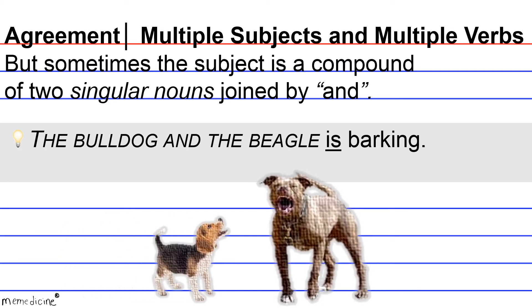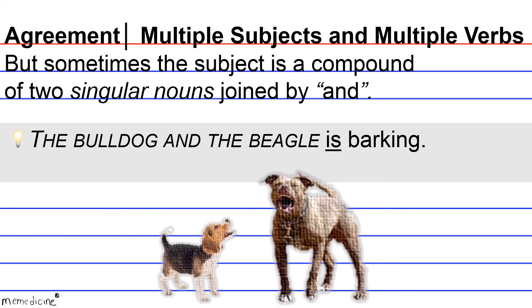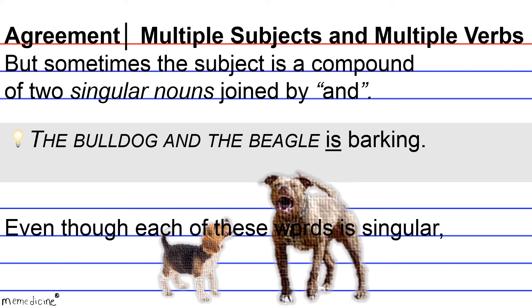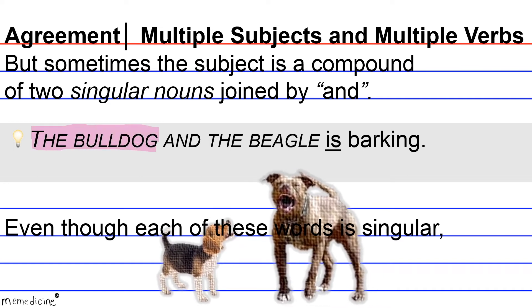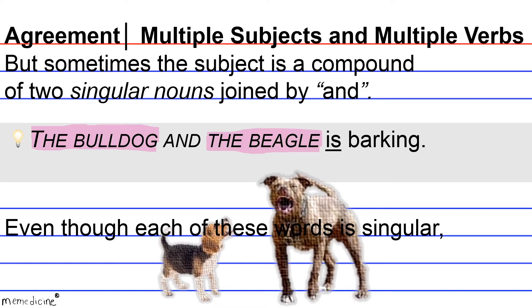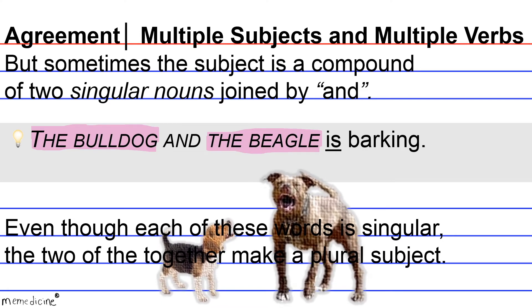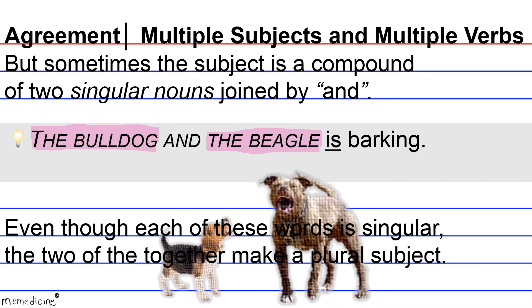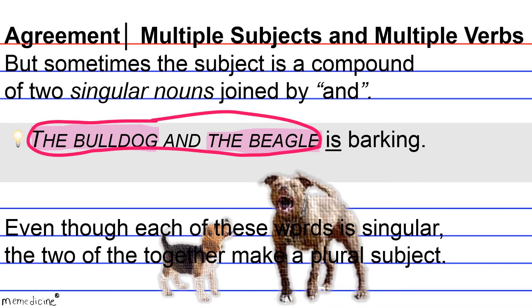The bulldog and the beagle is barking. Even though each of these words is singular — we have our first subject, the bulldog, which is singular, and our second subject, the beagle, which is also singular — the two of them together make a plural subject because they're joined by the conjunction 'and.' However, if you take a look at the verb selected, 'is' is a singular verb.